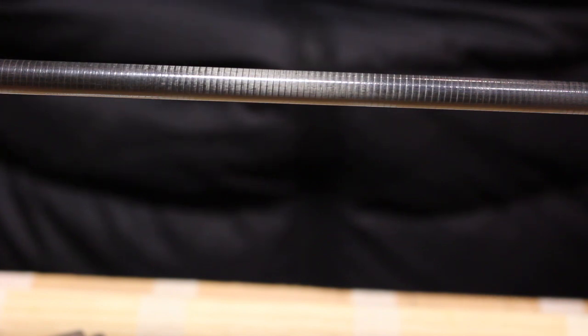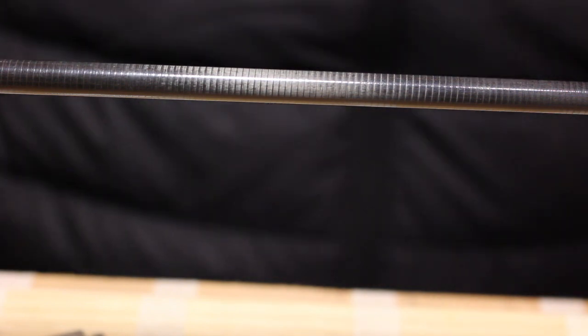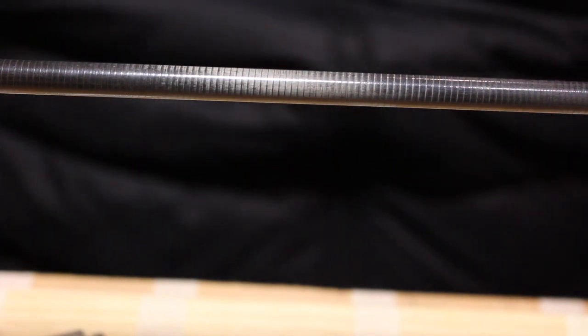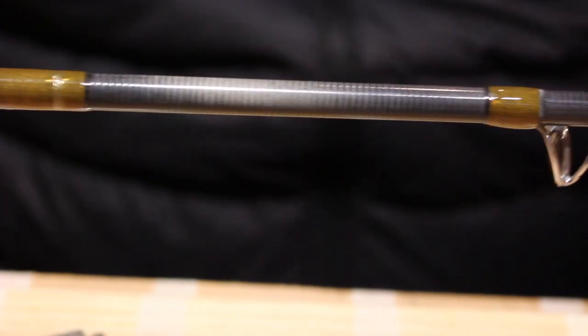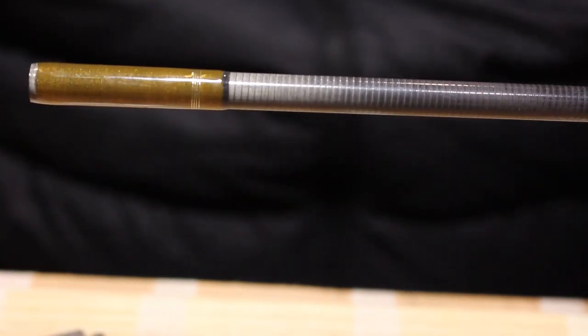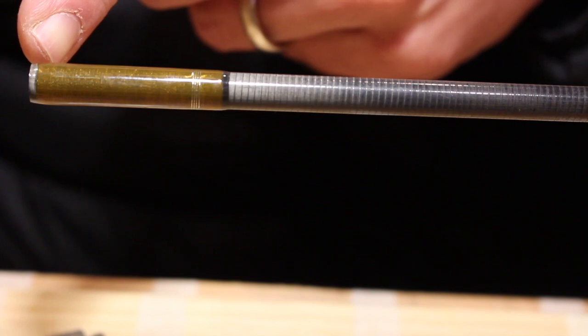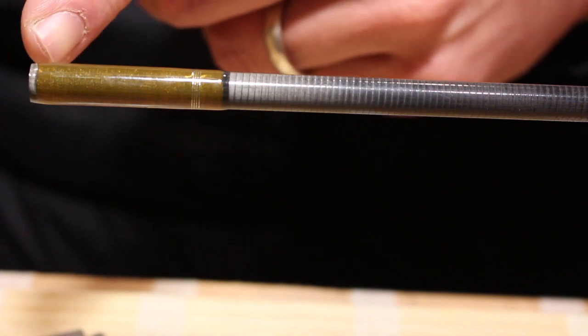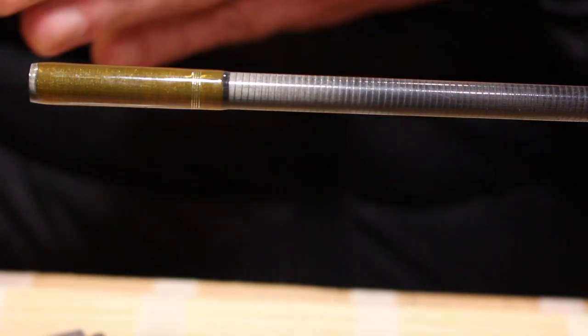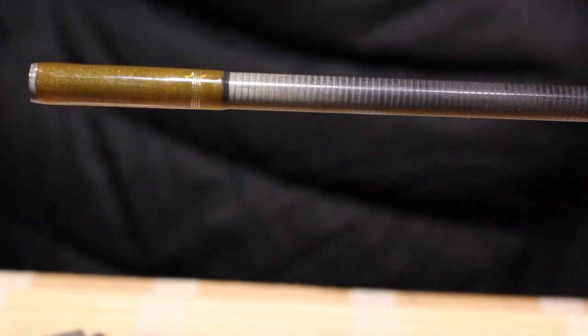So the first question is why would somebody want to use silk over nylon? Nylon is less expensive, it's more available, there's a wider range of colors. The main difference in silk, I'm going to show you two rods here. This first one is a G2 by Scott Rods and this is a ferrule wrap and as you can see in this picture I can look at this ferrule wrap and I can see the individual strands of thread.